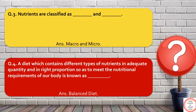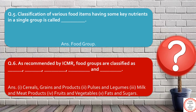Moving on to question number four: a diet which contains different types of nutrients in adequate quantity and in right proportion, so that the nutritional needs of the body can be met, is known as a balanced diet. It contains food from all the food groups. Food groups, as per ICMR or Indian Council of Medical Research, include cereals and products, pulses and legumes, milk and meat products, fruits and vegetables, and fats and sugars.